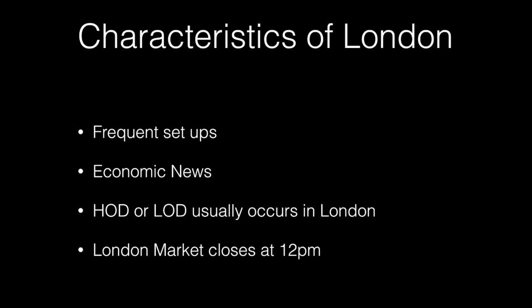Characteristics of London: frequent setups, economic news, and the high of the day or low of the day usually occurs in London. The London market closes at 12 p.m. You want to start monitoring from 2:30 a.m. Between 10 a.m. and 12 p.m. is usually the close of the London session, and you can usually anticipate a move in the opposite direction from whatever the strong direction was during that time.